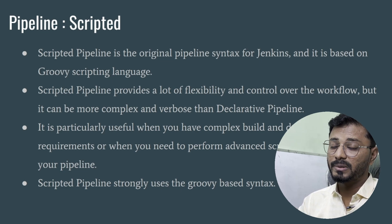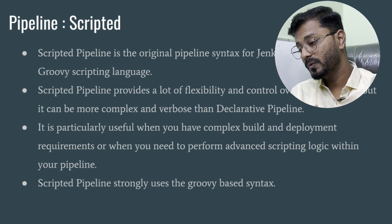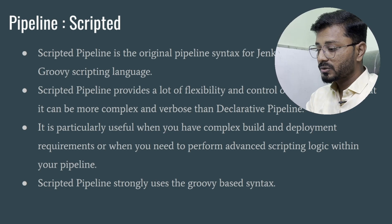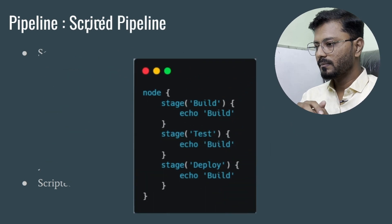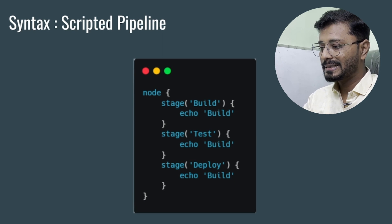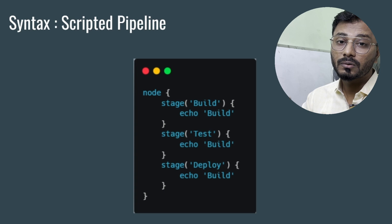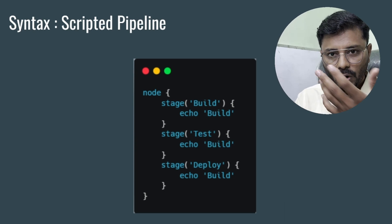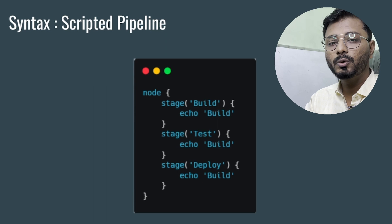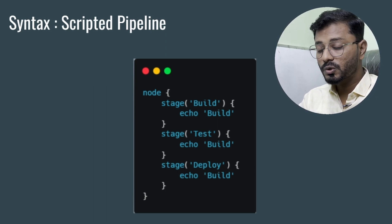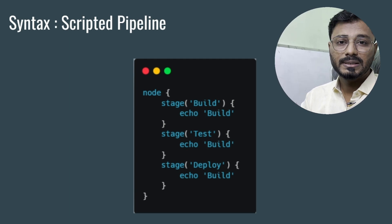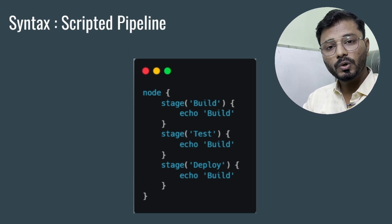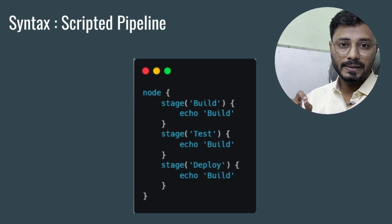Scripted pipeline is particularly useful when you have complex build or deployment requirements or complex logic within your pipeline. It strongly uses Groovy-based syntax. The scripted pipeline syntax uses a 'node' block, meaning the job runs on a Jenkins node, with stages like Build, Test, and Deploy — each performing operations, in this case simply echoing a string message.